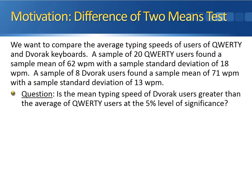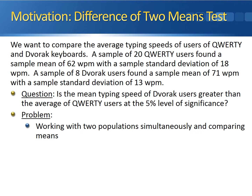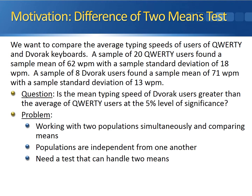We want to know if the mean typing speed of the Dvorak users is significantly greater than the average of QWERTY users at the 5% level of significance. The problem is that we're working with two populations simultaneously and comparing the means. These populations are independent from one another, so we need a test that can handle two means — the difference of two means test.